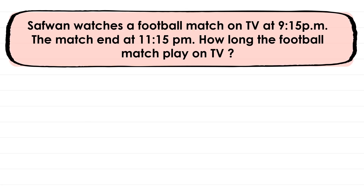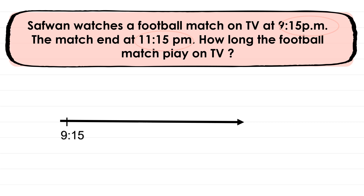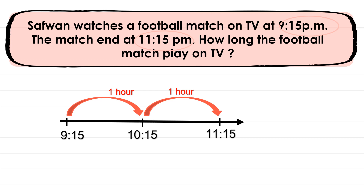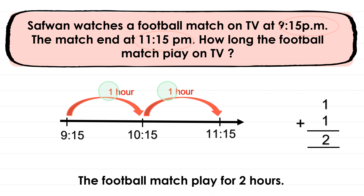First example — Sam watched a football match on TV at 9:15 PM. The match ended at 11:15 PM, so how long did the football match play on TV? I'm going to use a number line. It starts at 9:15 PM. One jump is one hour, so we add one hour to the hour part — 9 plus 1 becomes 10:15 PM. It still hasn't reached 11:15 PM, so we add one more hour. One hour plus one hour is two hours. So the football match played for two hours.